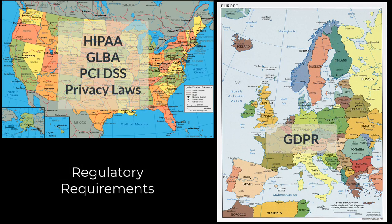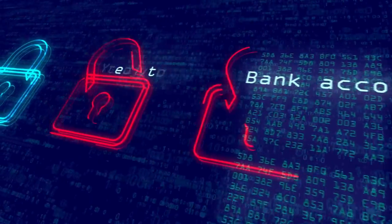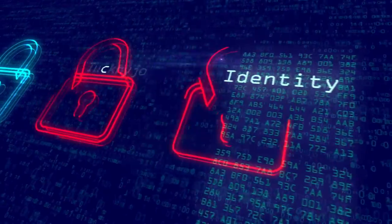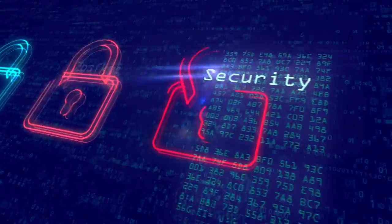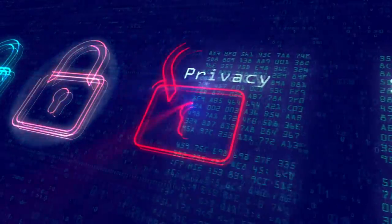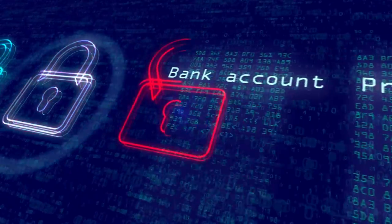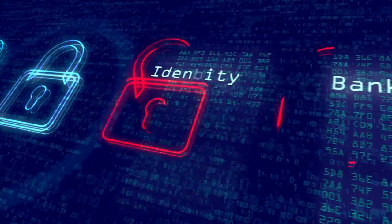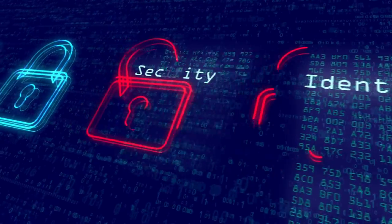Many industries are subject to strict data protection regulations such as the General Data Protection Regulation, GDPR in Europe, or the Health Insurance Portability and Accountability Act, or HIPAA, in the United States. These regulations require organizations to implement robust security measures to protect sensitive data. BitLocker helps organizations comply with these regulations by providing strong encryption for data stored on devices.